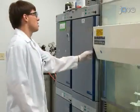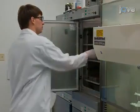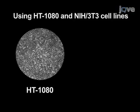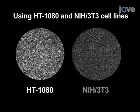Grow the cells for the tumor invasion assay to about 80% confluence. In this experiment, we will be using HT1080 and NIH 3T3 cell lines.